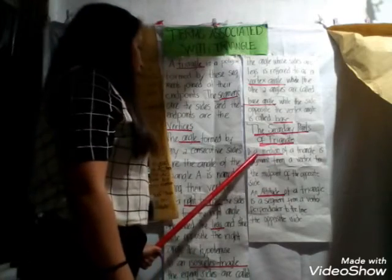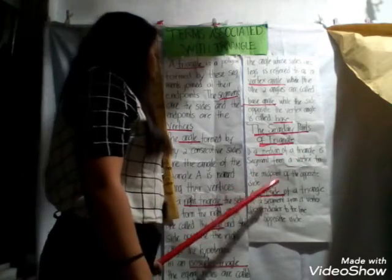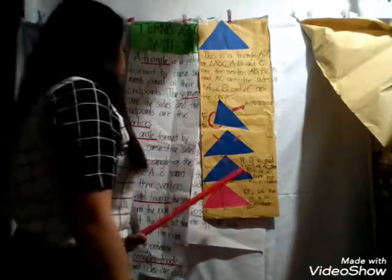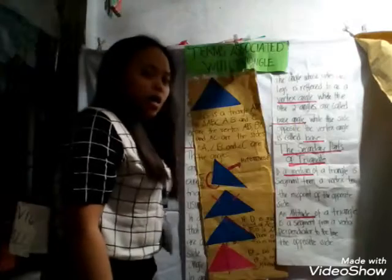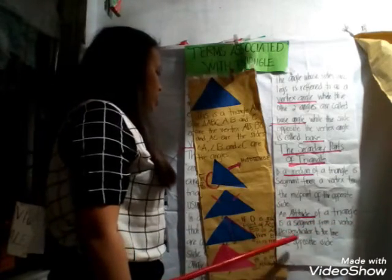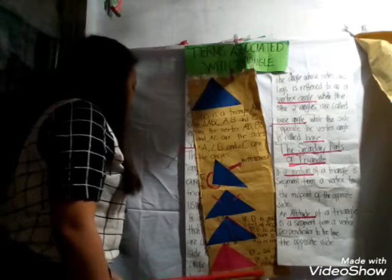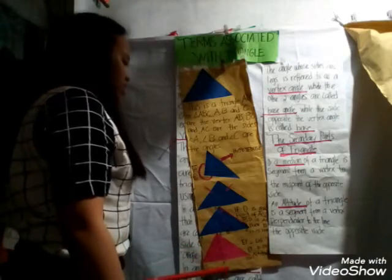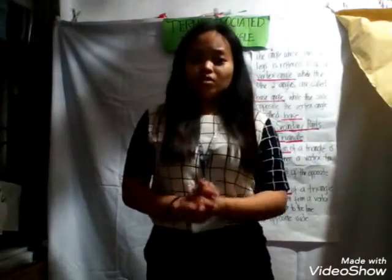Let's move on to the secondary parts of a triangle. A median of a triangle is a segment from a vertex to the midpoint of the opposite side. If side EC has midpoint D, we call BD the median. An altitude of a triangle is a segment from a vertex perpendicular to the line of the opposite side. So EF perpendicular to DG means EF is called the altitude.